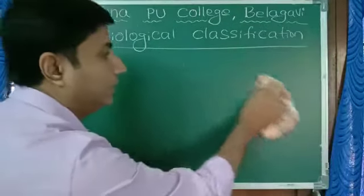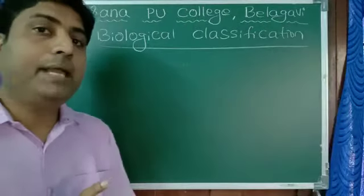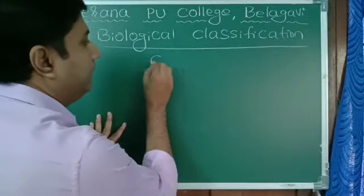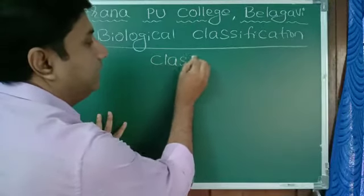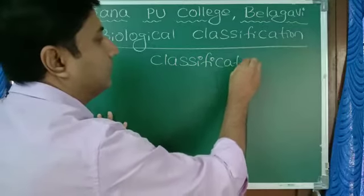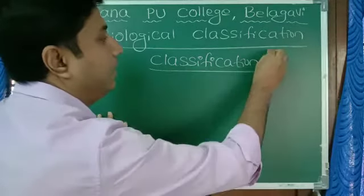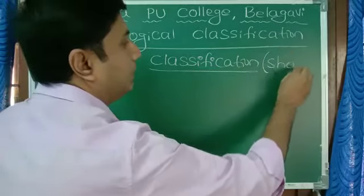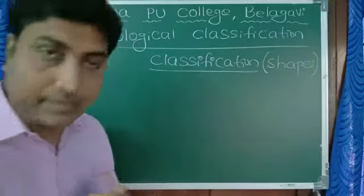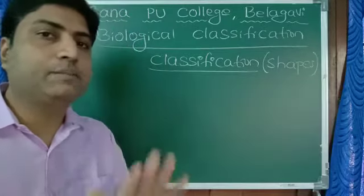These bacteria, based on their shape, they are classified. Classification of bacteria based on their shapes. There are four types of bacteria based on their shapes.